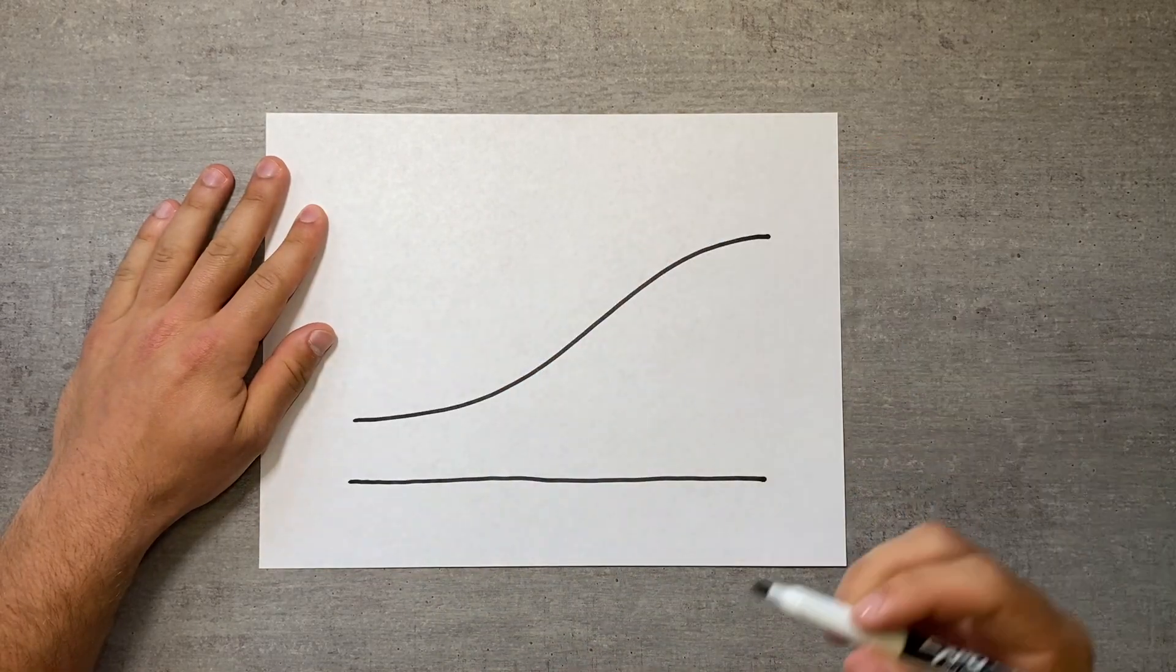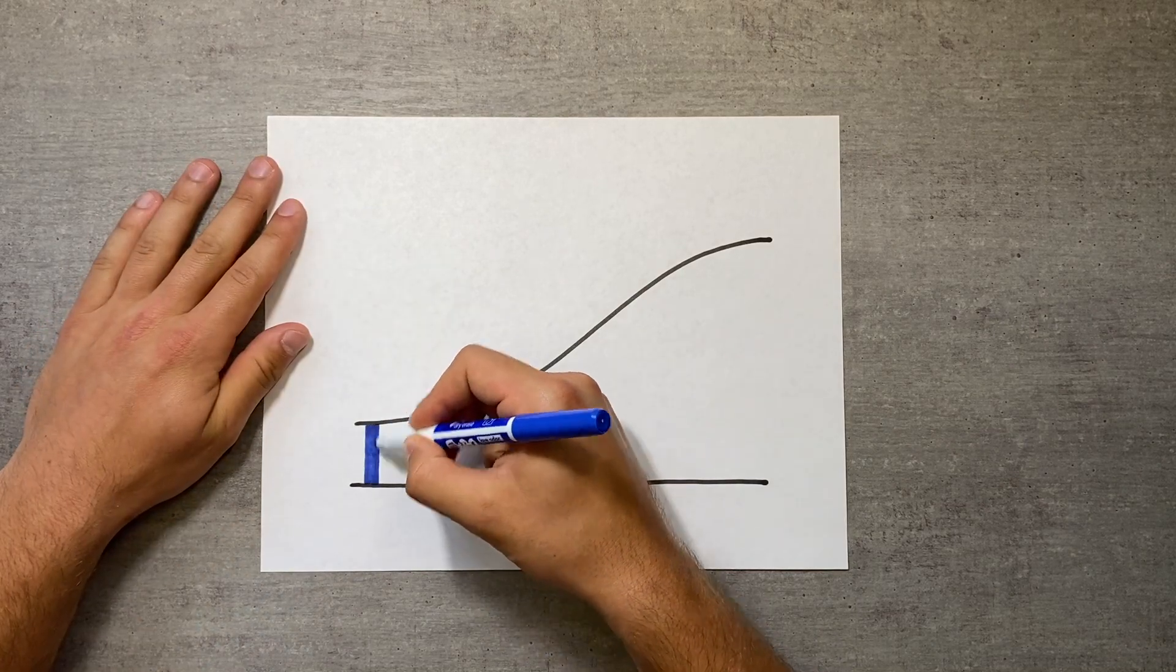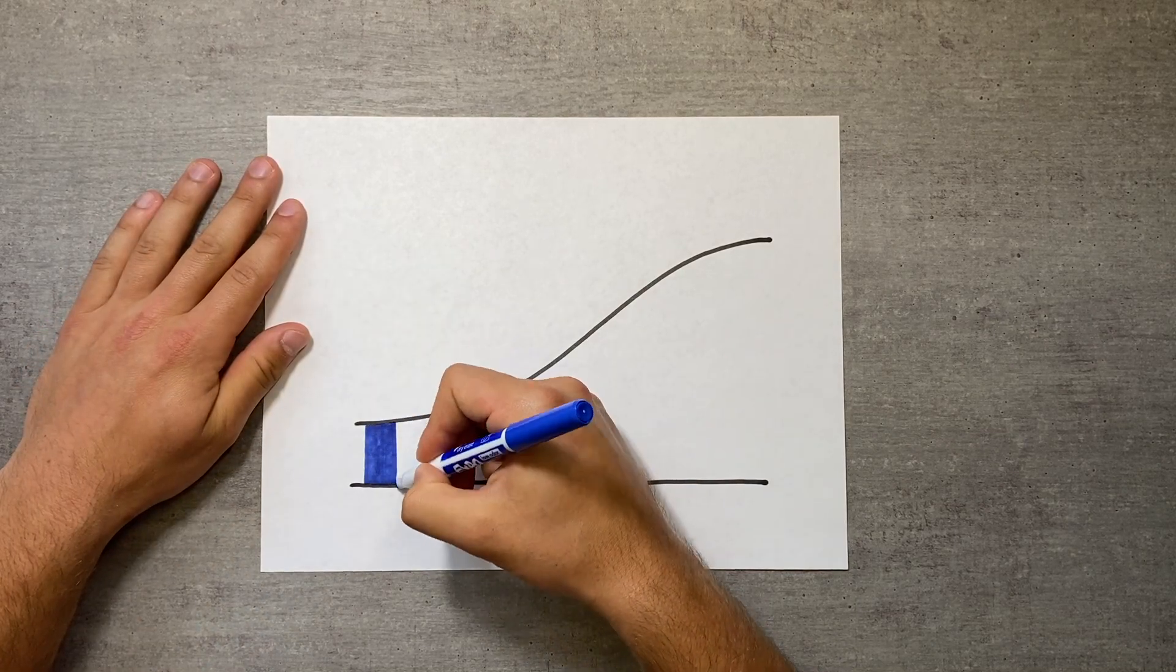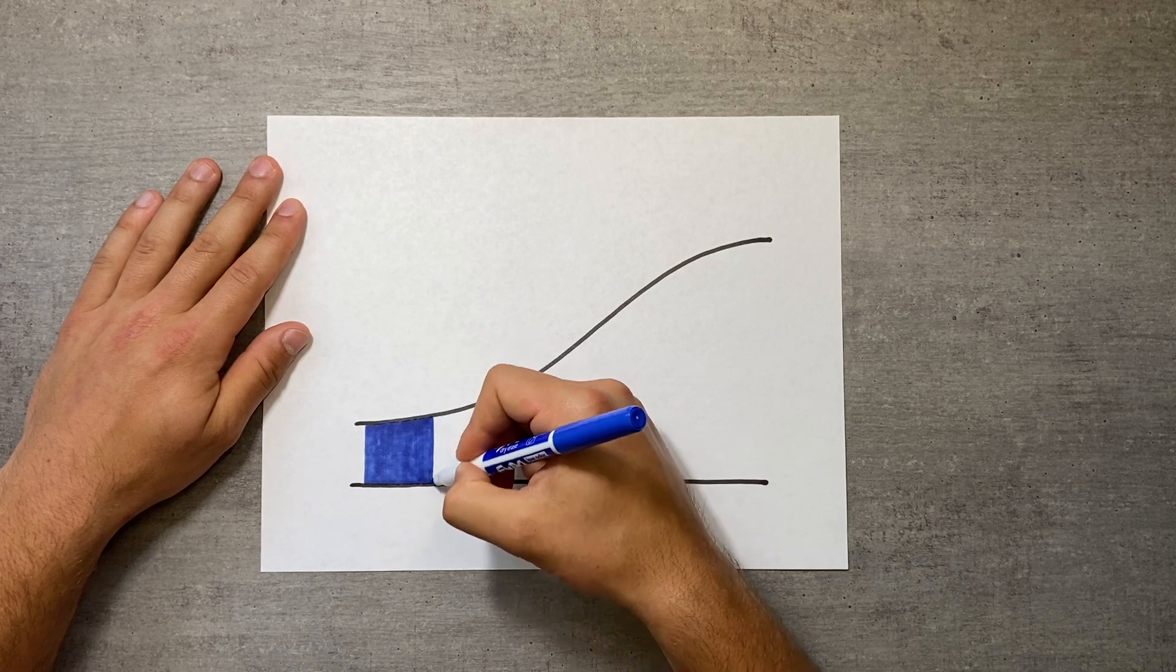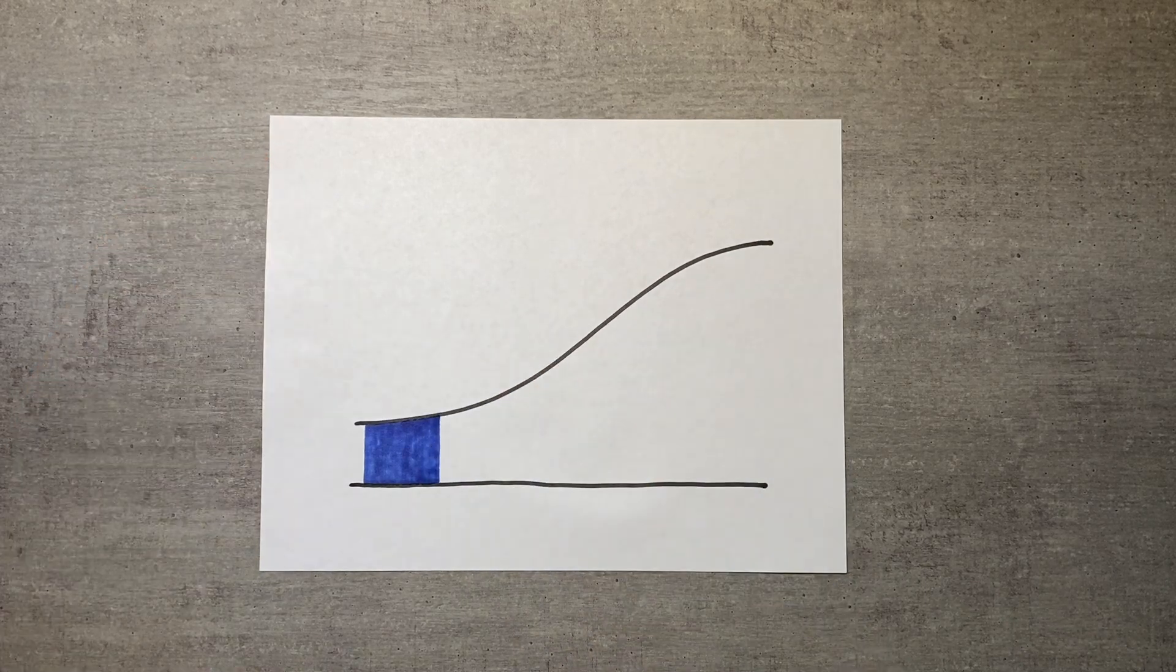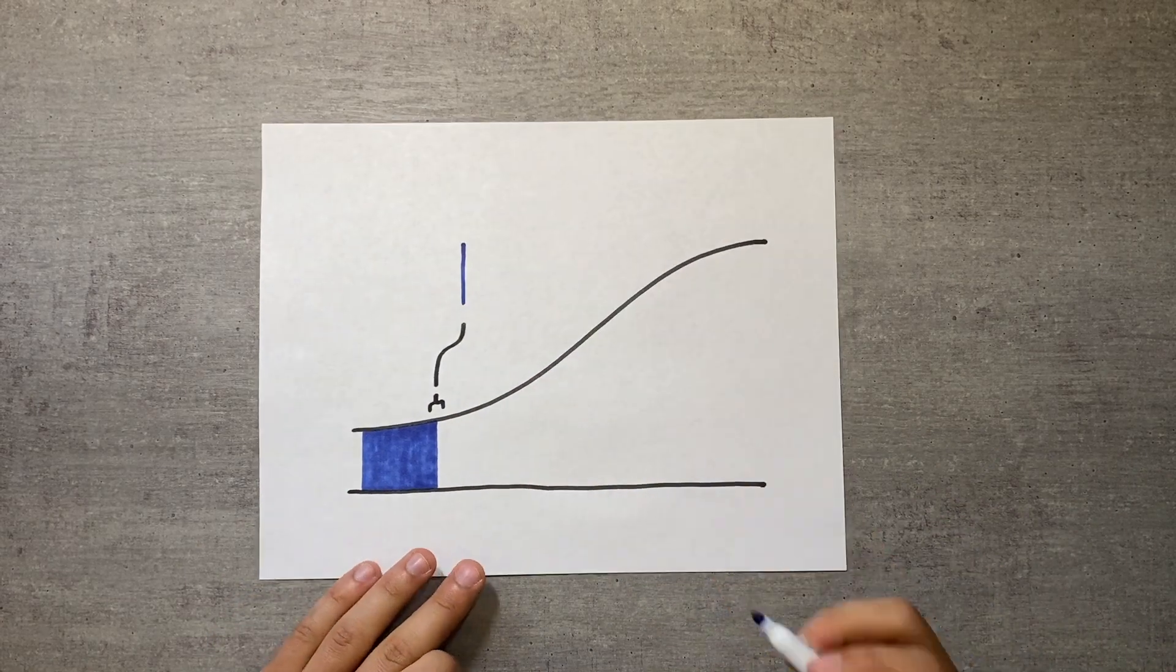We begin by simply visualizing the area function. The input to this function, x, is how far across the page my hand is, and the function's output is the amount of blue ink I've used, or the total area under the curve up until x. Our goal is to find out how quickly the area grows as its upper bound increases.